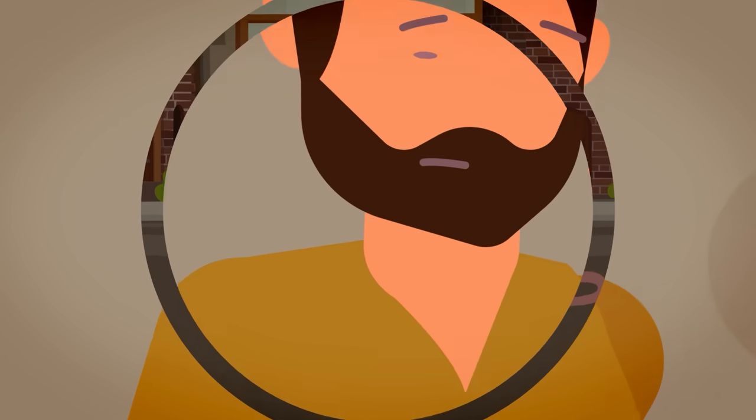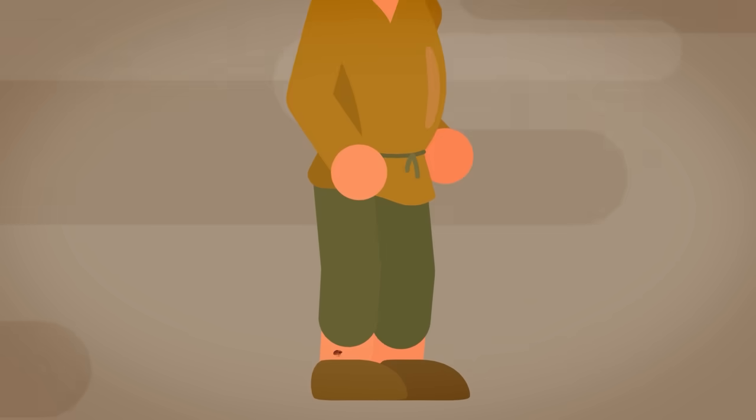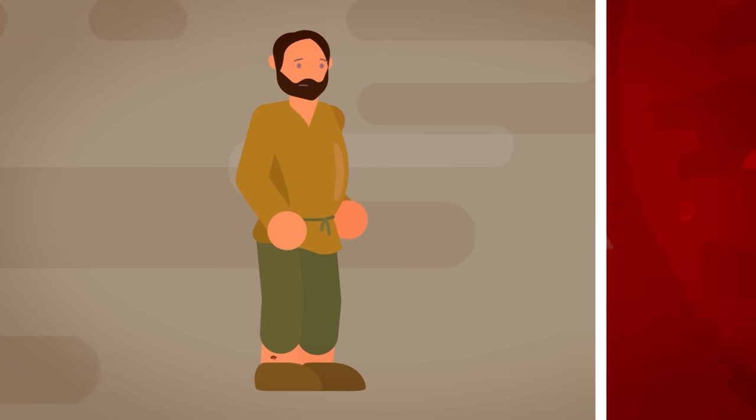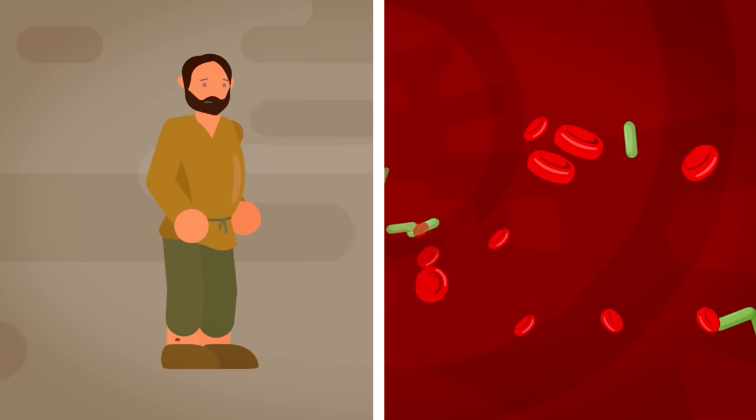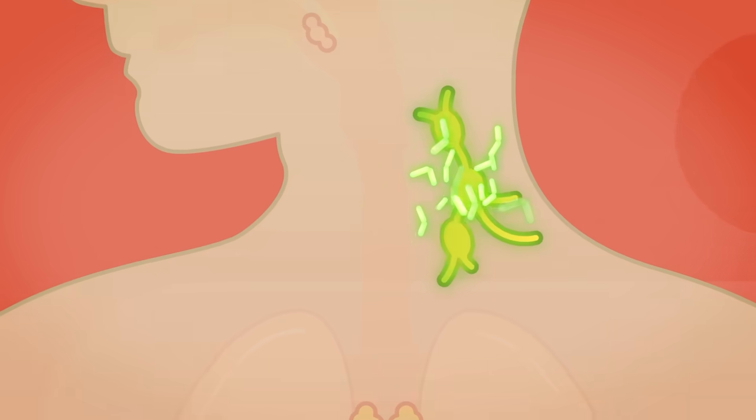When a flea carrying the Yersinia pestis bacteria bites a human, the bacteria gets into the bloodstream where it's carried throughout the body. The bacteria has a defense mechanism that allows it to fight off white blood cells, so it can continue on to a lymph node without being destroyed. It's here that the bacteria begin to reproduce.